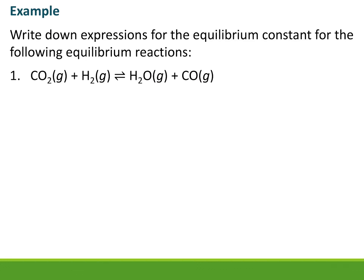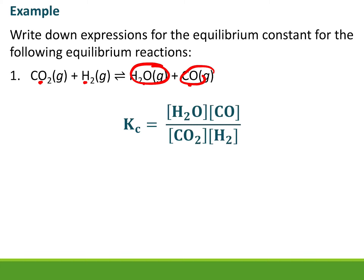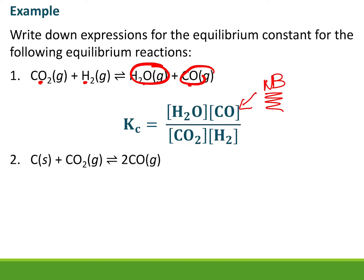Write down the expression for the equilibrium constant for the following reaction: CO₂ + H₂ ⇌ H₂O + CO. The products H₂O and CO go on the top. Since all the balancing numbers are one, there are no exponents. Square brackets — which mean concentration — are very important. So we have: Kc = [H₂O][CO] / [CO₂][H₂]. Nice and straightforward.